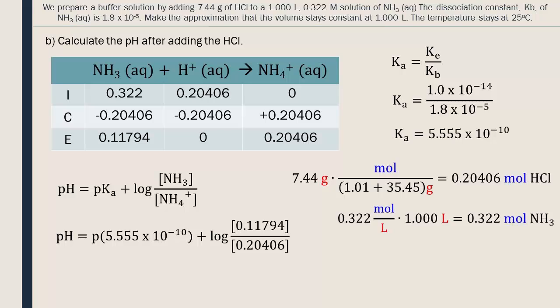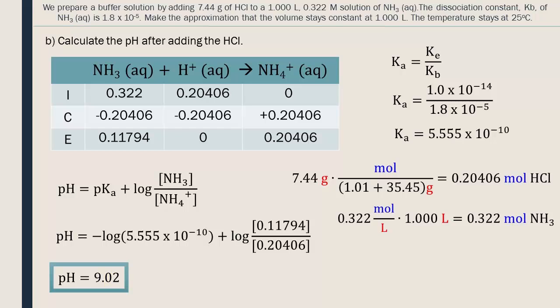Next, to determine our pKa, we need to take the negative log of our Ka. Now our equation is complete. Rounding to two significant digits, the pH after adding the HCl is 9.02.